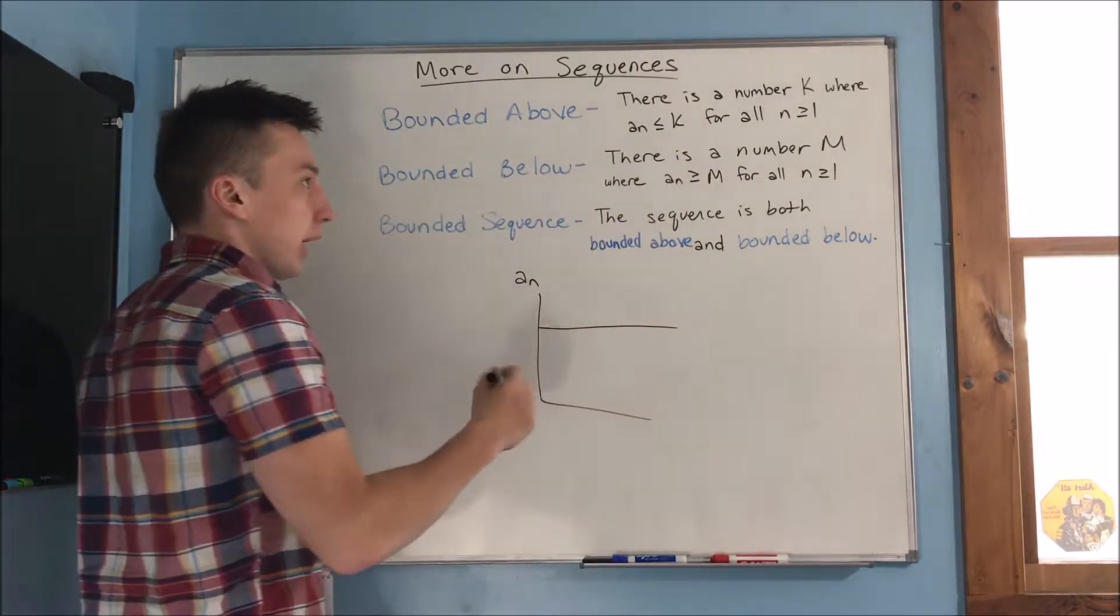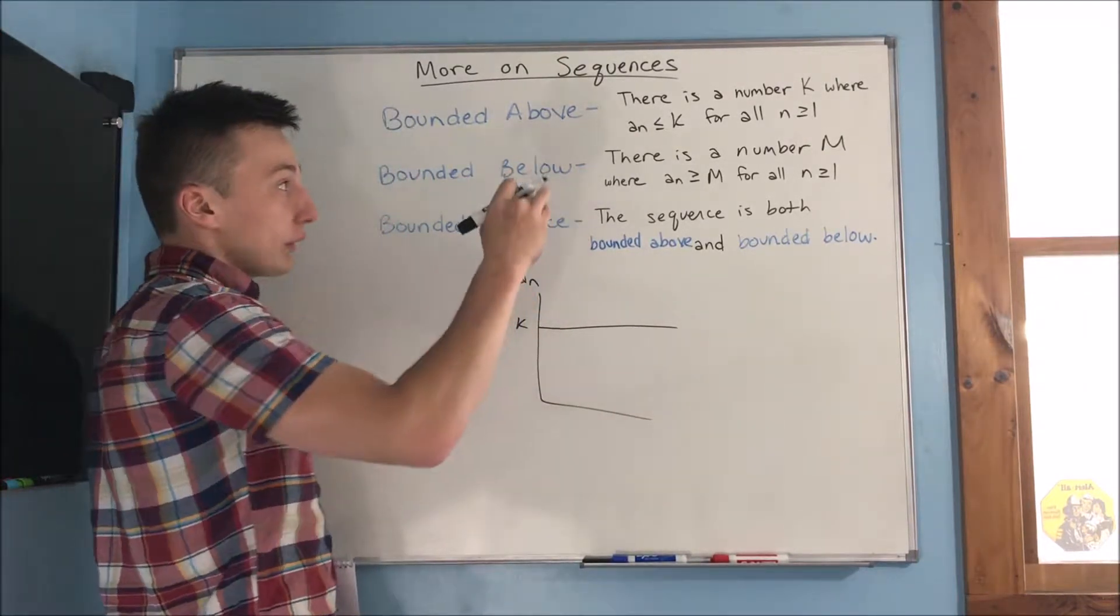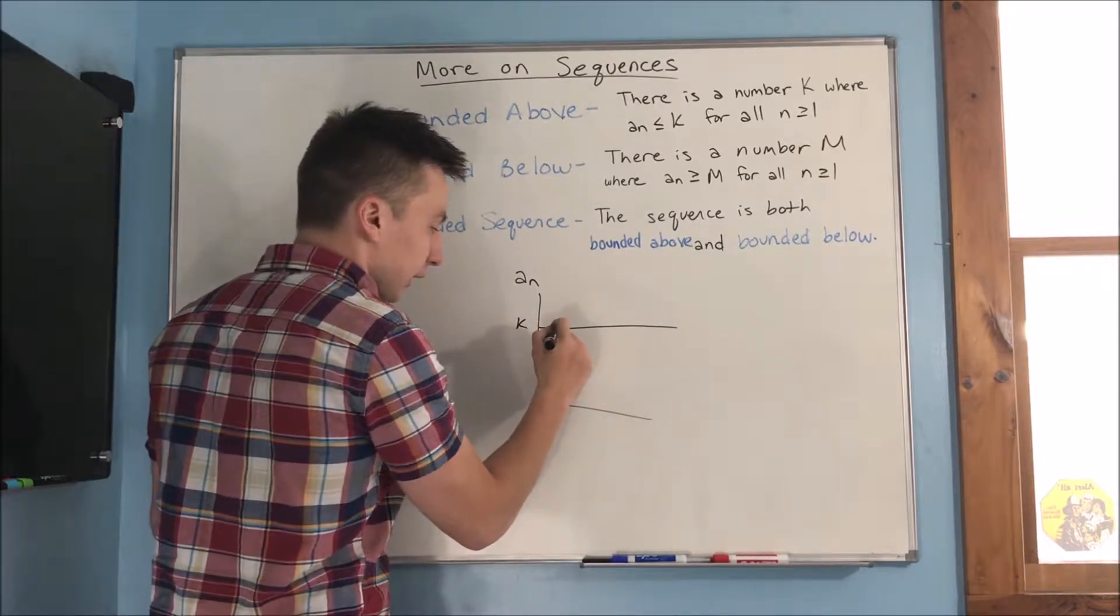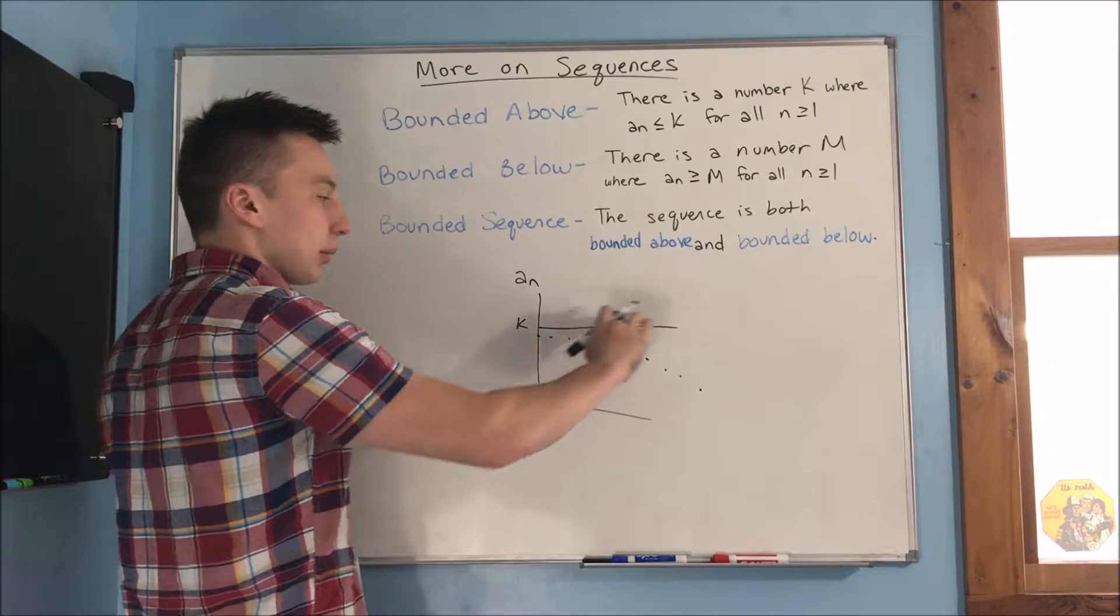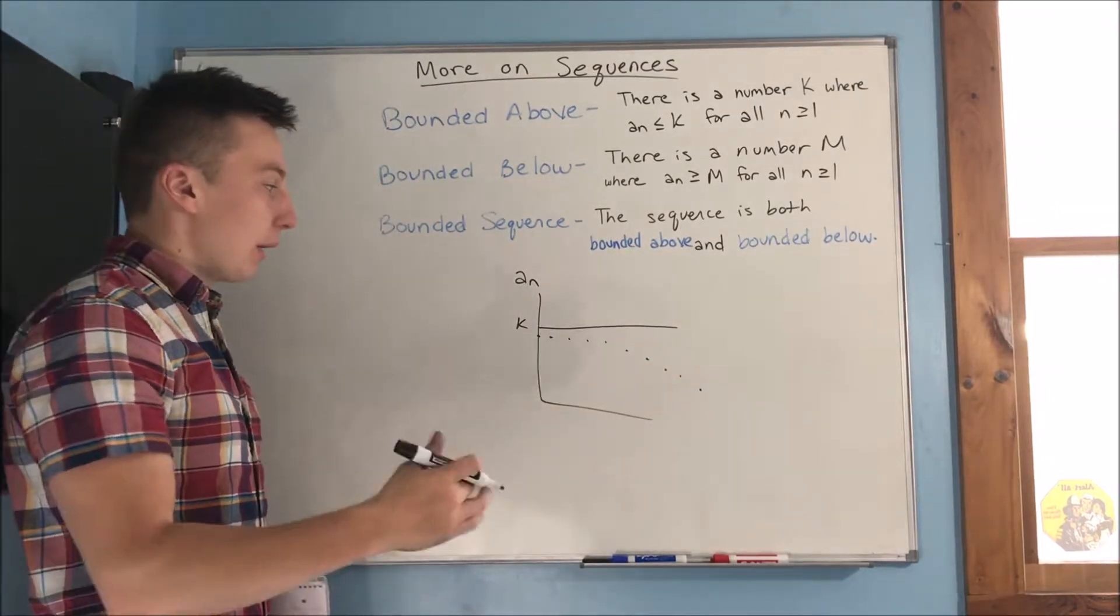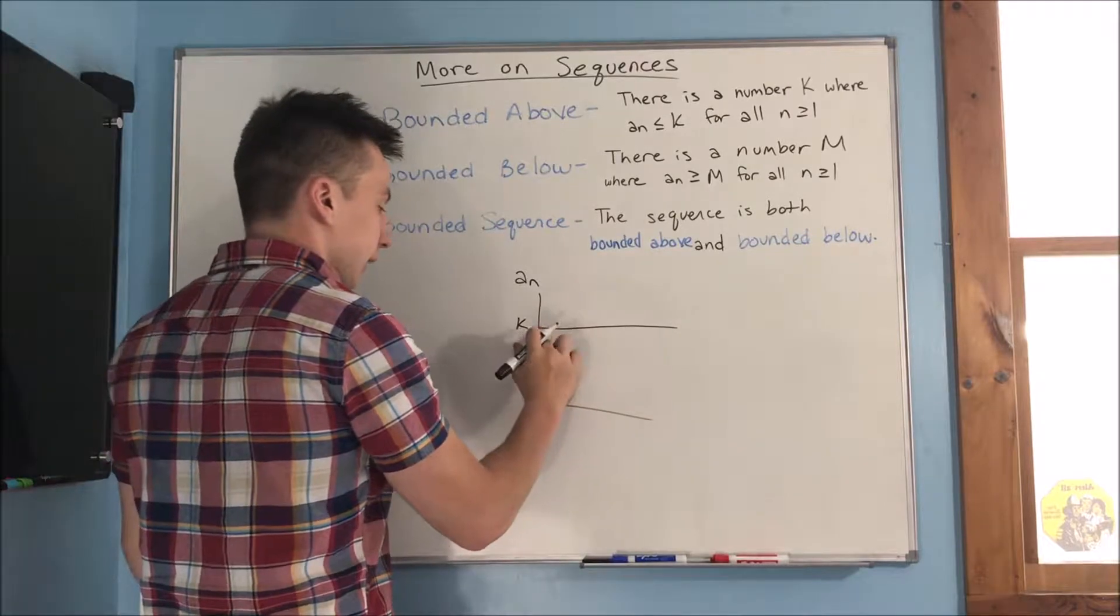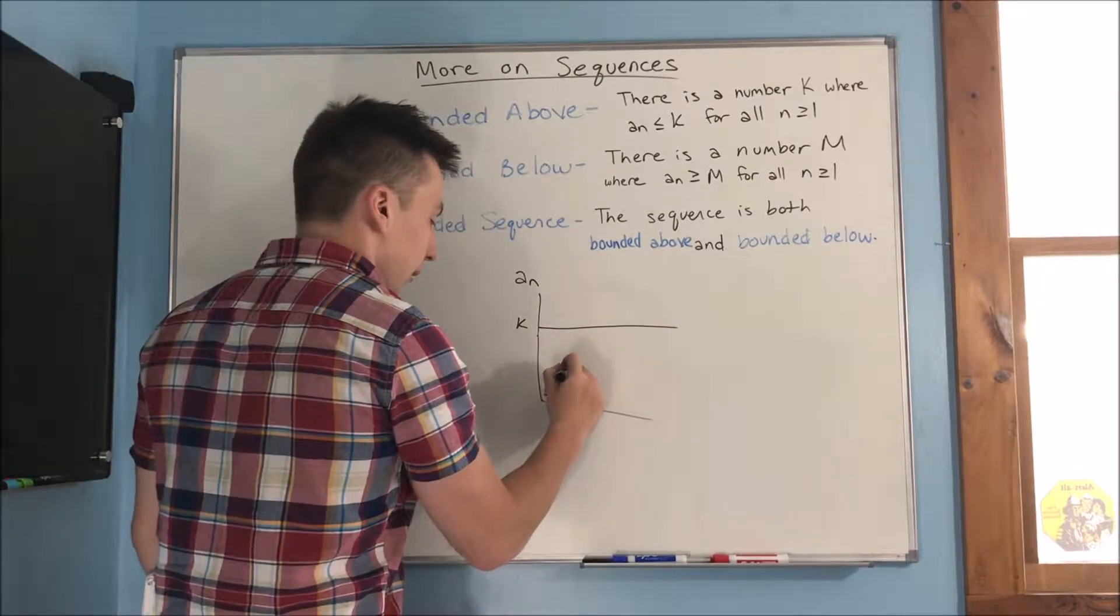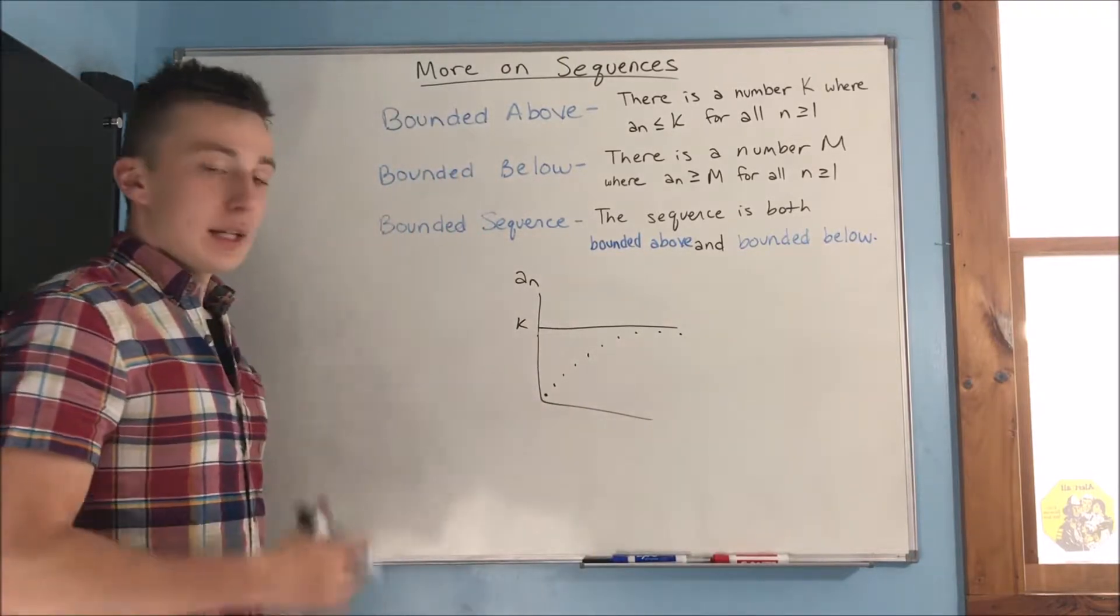There is a number k, so we'll put k right here, where a sub n is always going to be less than or equal to k. So, it's going to look something like this. And it can do whatever, but it's never going to be able to touch k. Okay, so it's bounded above. Or, you could, on the other hand, you could say something like this. Maybe k is more of an asymptote for it. It's bounded above.